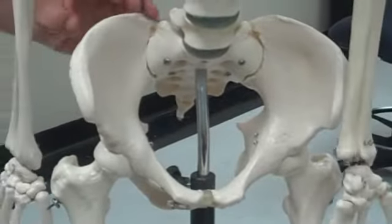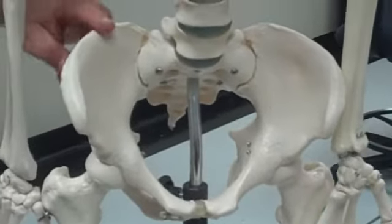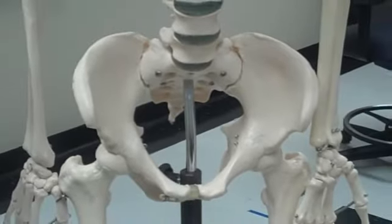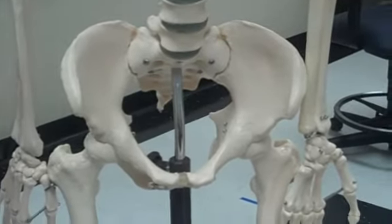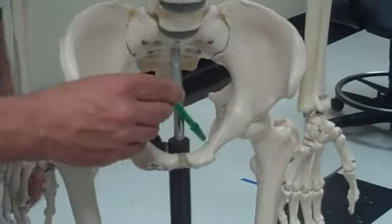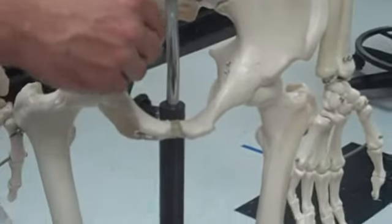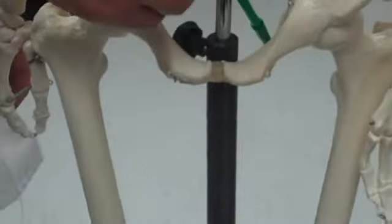And then we have iliac crest up here. And then we move on to the ischium. It's down here. Ischium. Easy way to remember, it's back towards your butt, so it's ishy.